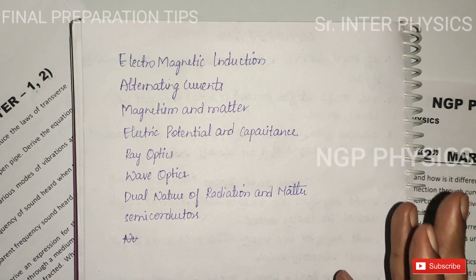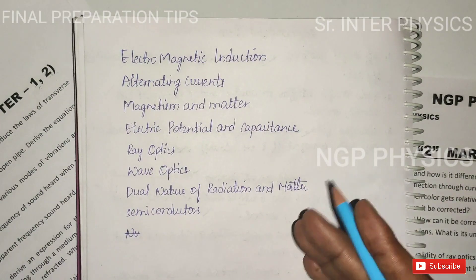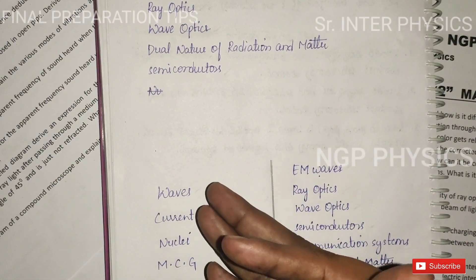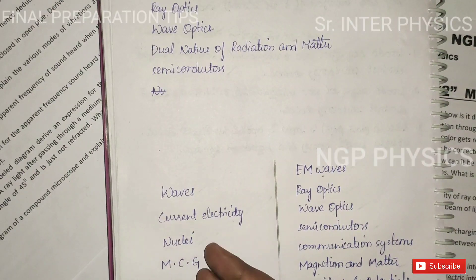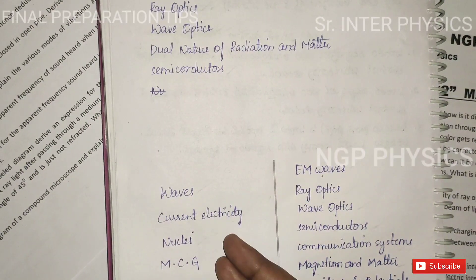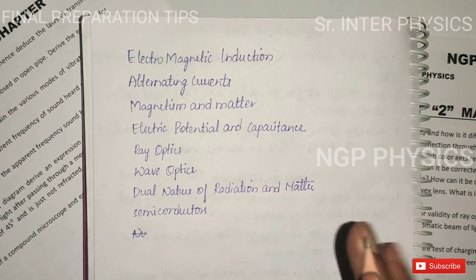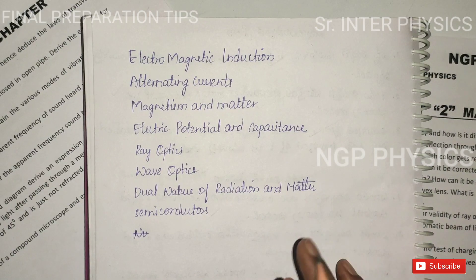The next one is 14 chapters, then 3 chapters. The next topics are Waves, Electricity, and Nuclear Energy. The rest covers 11 chapters, and the 8th question follows the same pattern.